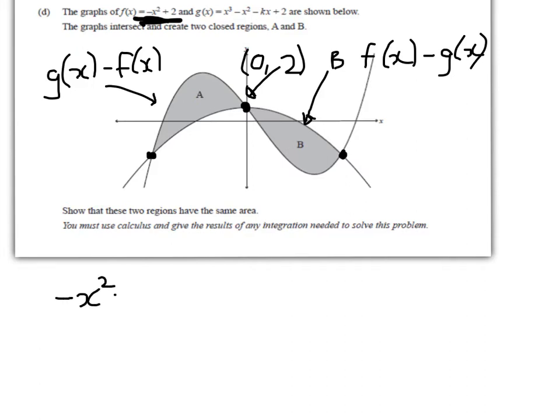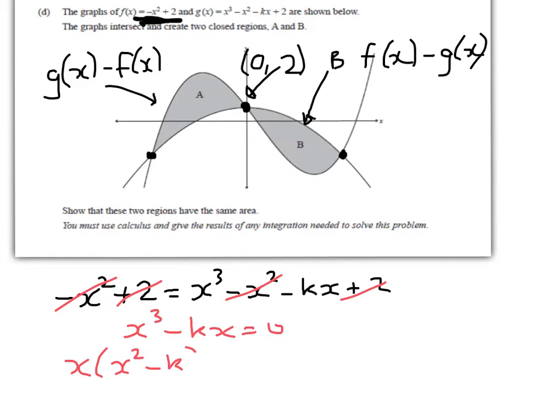We get -x² + 2 equals x³ - x² - kx + 2. A lot of stuff simplifies out, and we're left with x³ - kx = 0. Factorizing, we get x(x² - k) = 0. We recognize this is a difference of two squares, so x = 0.